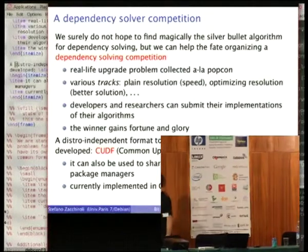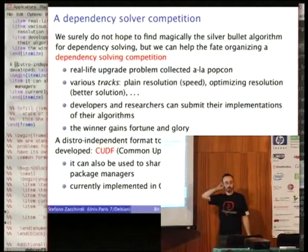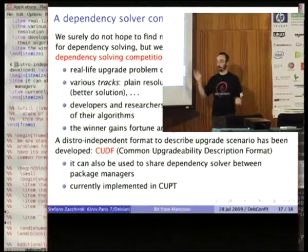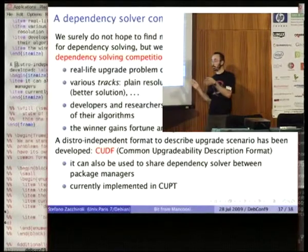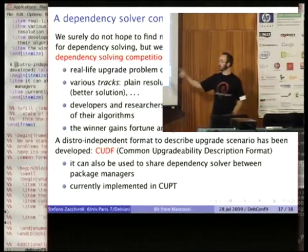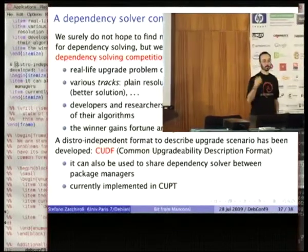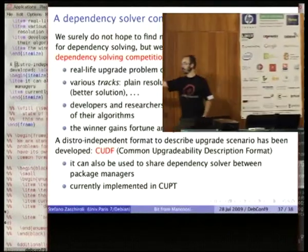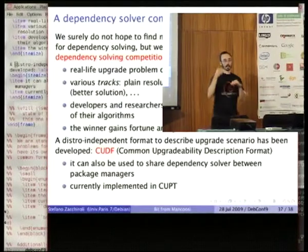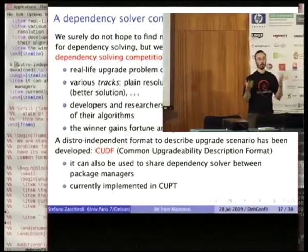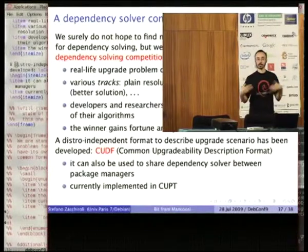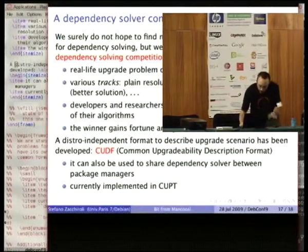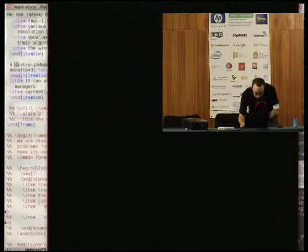We have already developed a format to exchange upgrade problem descriptions that is distribution-independent and works both in the Red Hat world and the Debian world. It has currently been implemented in CUPT. With CUPT you can already dump your kind of dependency scenario. CUPT is basically an attempt to reimplement the APT stack while being compatible with all options of APT, so it should become a drop-in replacement for APT with a hopefully cleaner code base.